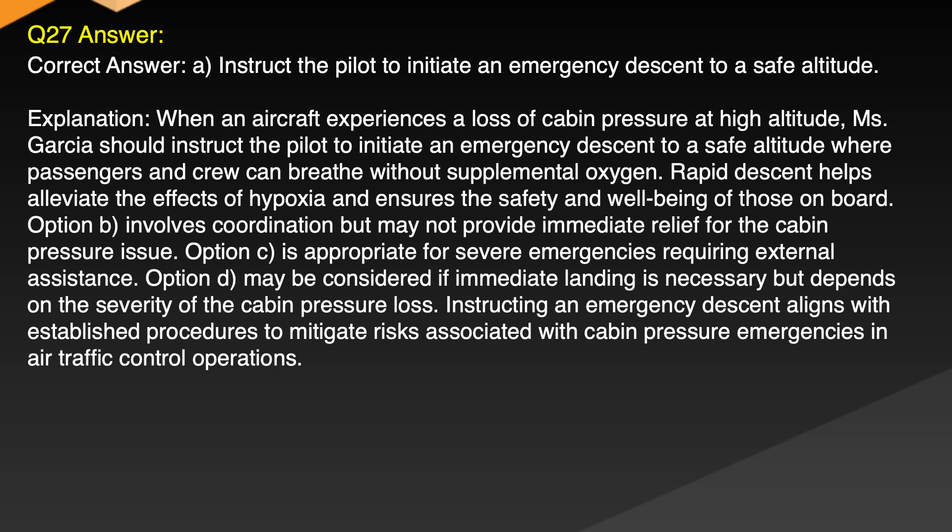Explanation: When an aircraft experiences a loss of cabin pressure at high altitude, Ms. Garcia should instruct the pilot to initiate an emergency descent to a safe altitude where passengers and crew can breathe without supplemental oxygen. Rapid descent helps alleviate the effects of hypoxia and ensures the safety and wellbeing of those on board. Option B involves coordination but may not provide immediate relief for the cabin pressure issue. Option C is appropriate for severe emergencies requiring external assistance. Option D may be considered if immediate landing is necessary but depends on the severity of the cabin pressure loss. Instructing an emergency descent aligns with established procedures to mitigate risks associated with cabin pressure emergencies.